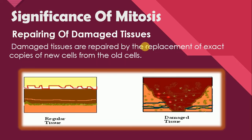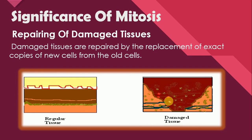Next is the repairing of damaged tissues. Damaged tissues are repaired by the replacement of exact copies of new cells from the old cells. Mitosis plays an important role in repairing damaged tissues — through mitosis, new copies of cells are made from old cells that are exactly like the old ones, and in this way damaged tissue is repaired by the formation of new cells.